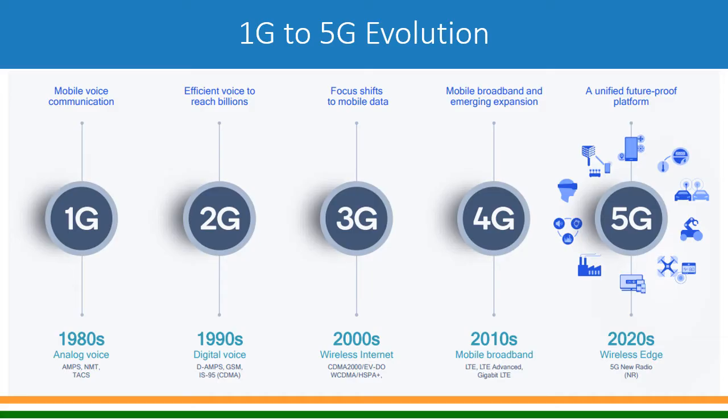From the 1980s to 1990s, a ten-year gap, came our famous 2G, which is still running. Second generation mobile telecommunications was called efficient voice to reach billions of people. It was digital voice, and the technologies used for 2G are D-AMPS, GSM, IS-95, and CDMA. Of these, GSM has survived and even today many countries offer 2G services using GSM technology.